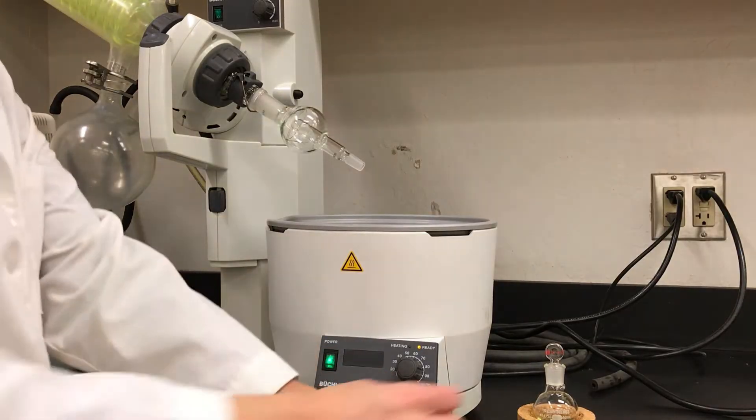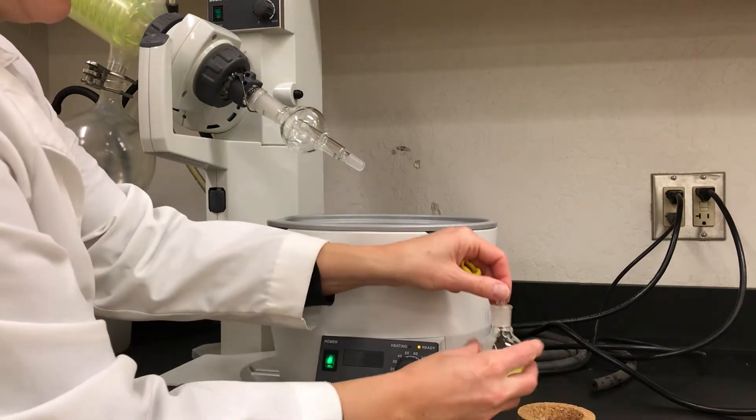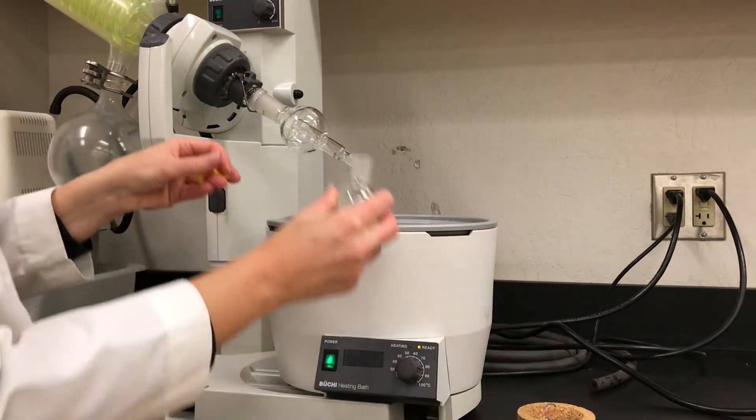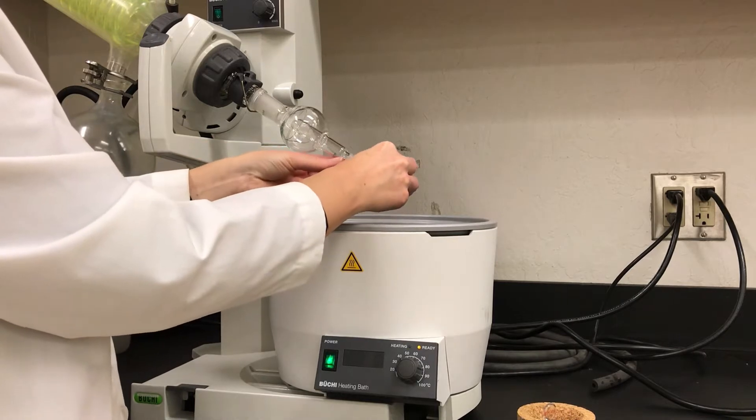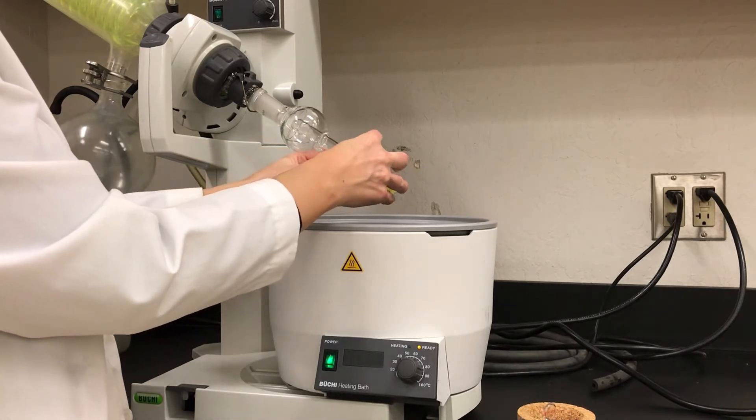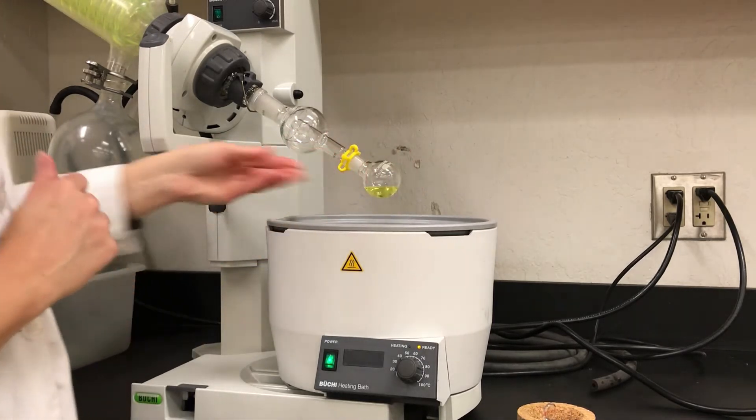First I'll connect my flask to that bulbous glass piece which is called a bump trap and we'll connect it with a plastic clip. You do want to make sure that your flask is no more than half full or else it will bump.